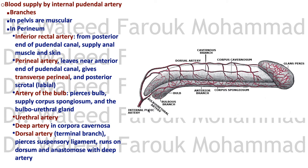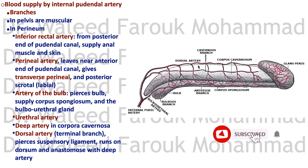The artery of the bulb pierces the bulb and continues as the spongiosal artery to supply the corpus spongiosum and the urethra. There is also a urethral branch, a deep artery in the corpus cavernosum, and a dorsal artery on top of the penis, and they all anastomose together.